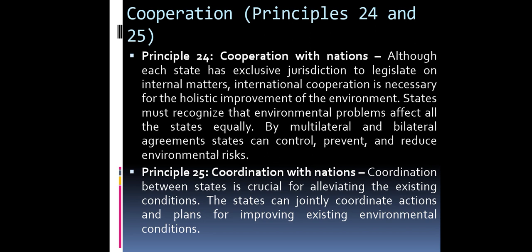Cooperation. Principles 24 and 25. Principle 24 — Cooperation with nations. Although each state has exclusive jurisdiction to legislate on internal matters, international cooperation is necessary for the holistic improvement of the environment. States must recognize that environmental problems affect all states equally. Through multilateral and bilateral agreements, states can control, prevent, and reduce environmental risk. Principle 25 — Coordination with nations. Coordination between states is crucial for improving existing conditions. States can jointly coordinate actions and plans for improving existing environmental conditions.